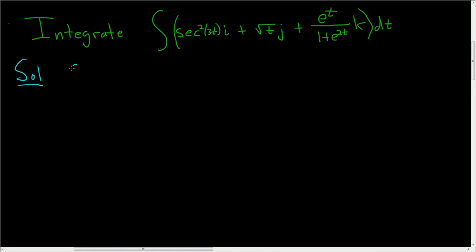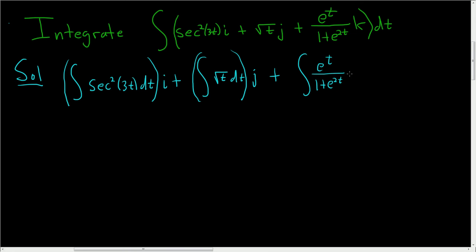So this is the antiderivative of secant squared 3t dt i plus the antiderivative of the square root of t dt j, and then plus the antiderivative of e to the t over 1 plus e to the 2t dt k.